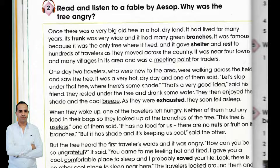The Travelers and the Tree by Aesop. Once there was a very big old tree in a hot, dry land. It had lived for many years. Its trunk was very wide, and it had many green branches. It was famous because it was the only tree where it lived, and it gave shelter and rest to hundreds of travelers as they moved across the country.